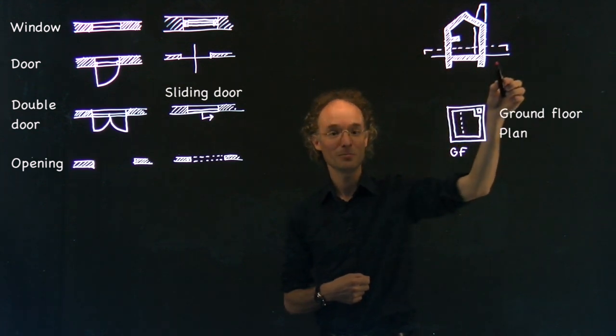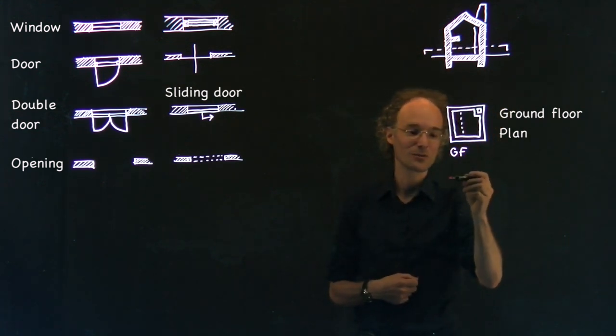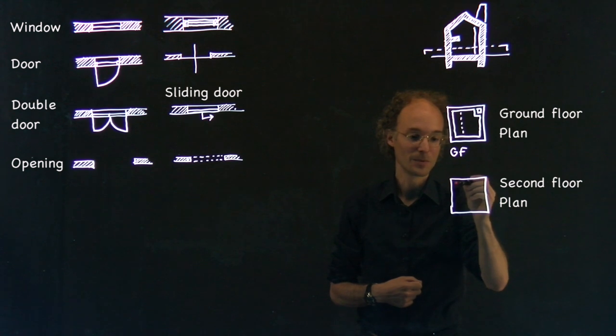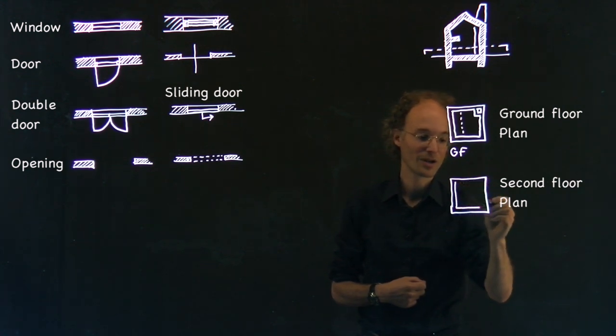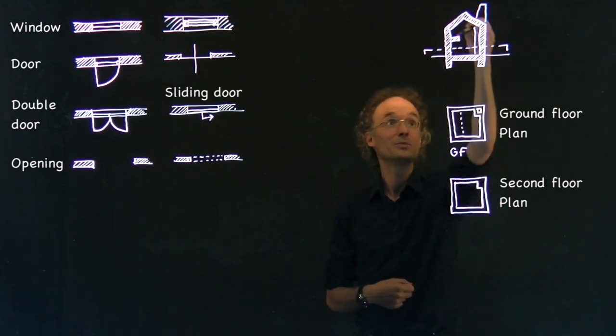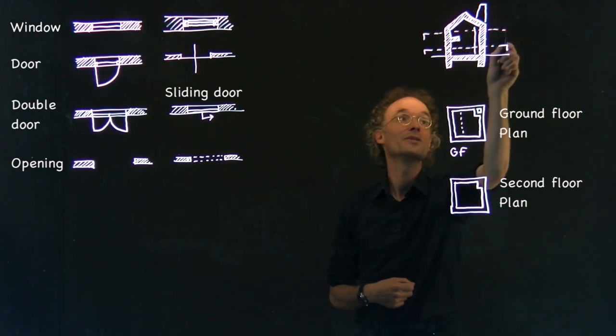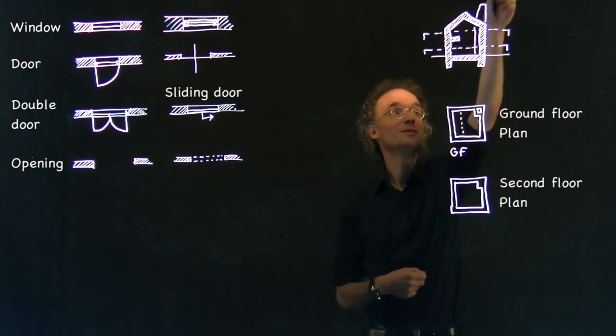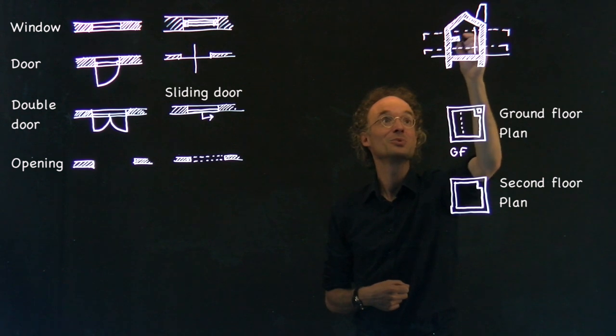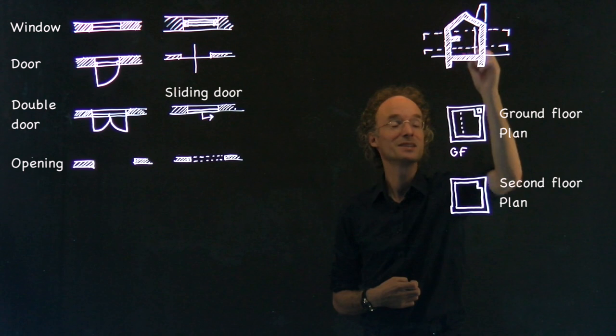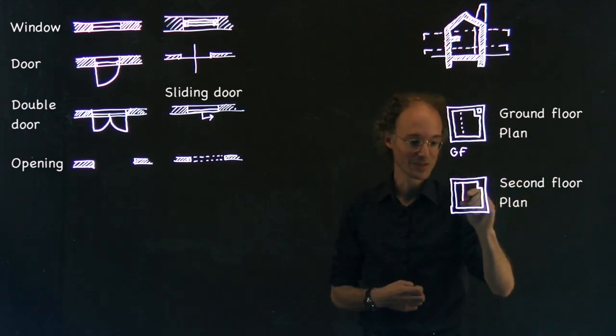If I would draw a plan of the second floor, of course this would be again a square plan with the interior of the building. The chimney again. Then I would see, so the second floor plan is looking down a meter above the second floor level. And if I look down I see the gallery, so I have to draw this gallery here.